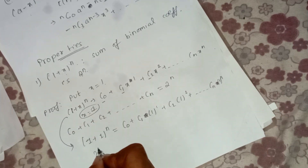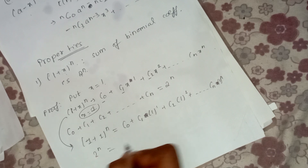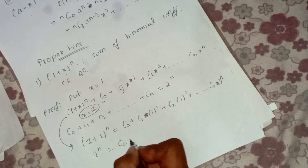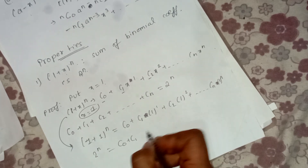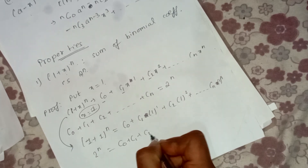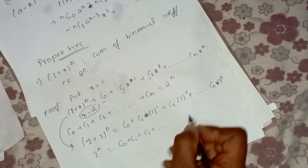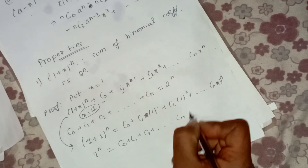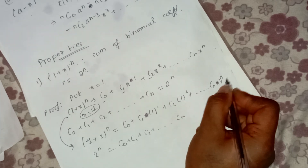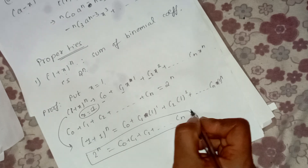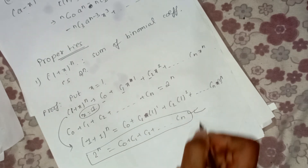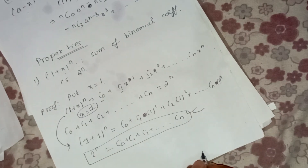So C(n,0) is 1, C(n,1) and C(n,2) through C(n,n) all sum to 2^n. This is the first property of binomial coefficients.